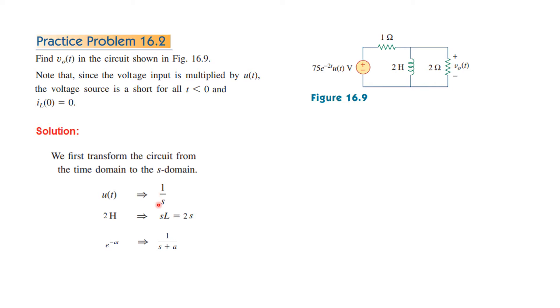So first of all we will take help of these transforms. UT is 1 over S and 2H inductor we know is written as SL and e^(at) can be written as 1 over S plus 1. So let's transform the circuit into S domain. 75 e raised to the power minus 2T from this formula will be S plus 2. So 75 divided by S plus 2, 2H will become 2S, resistor no change.